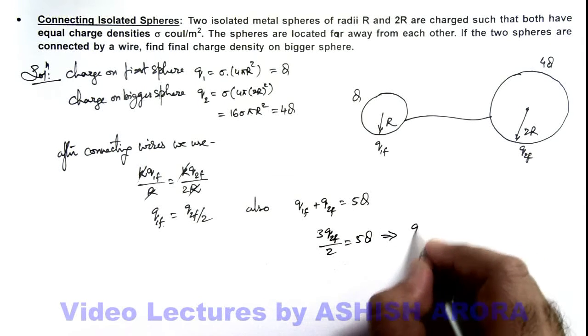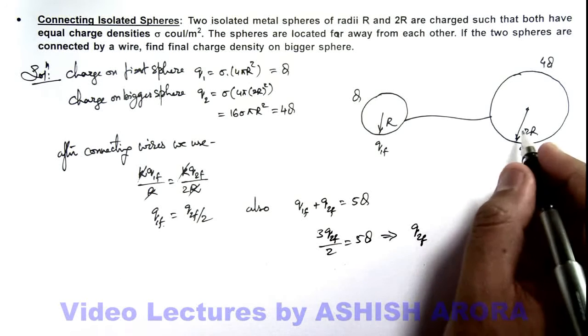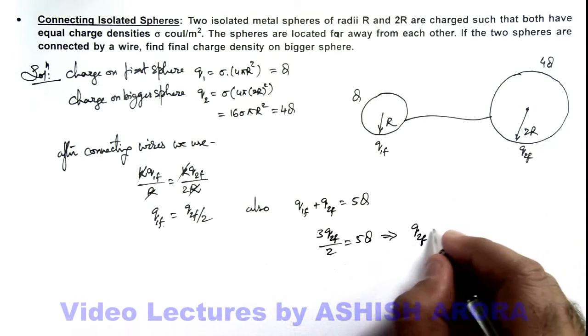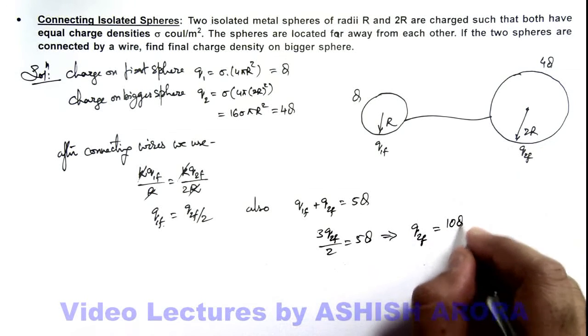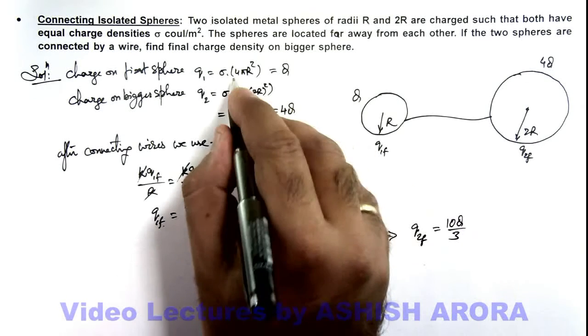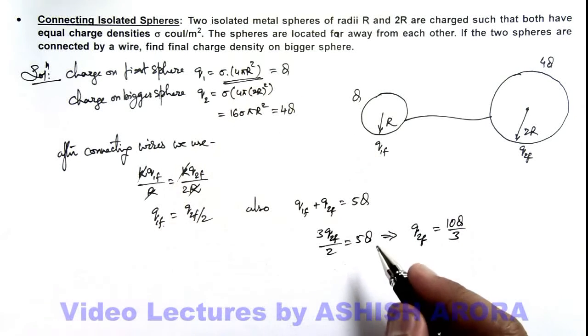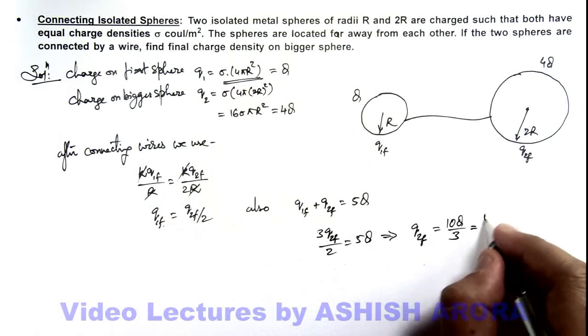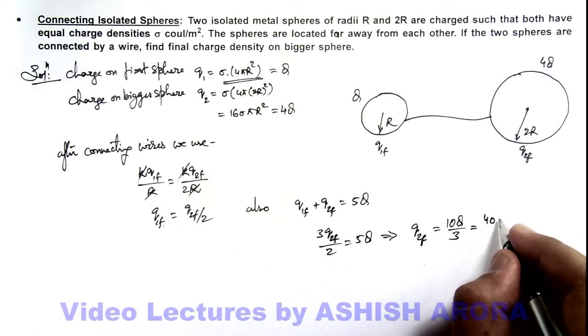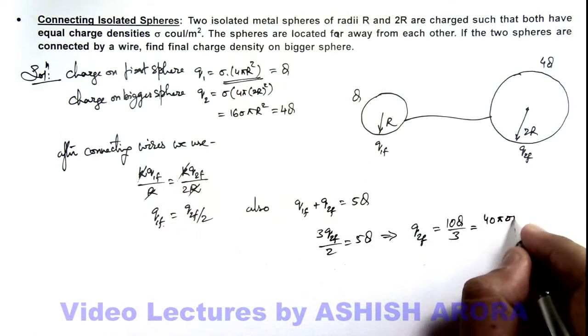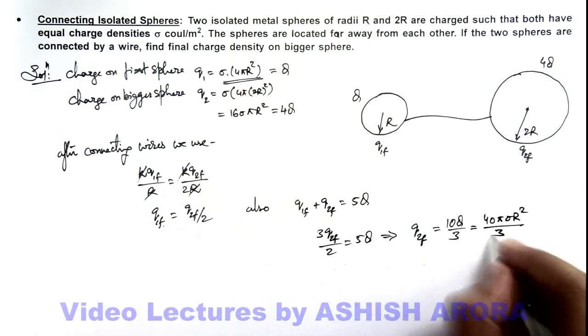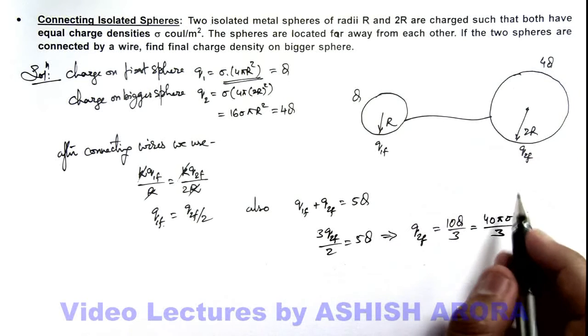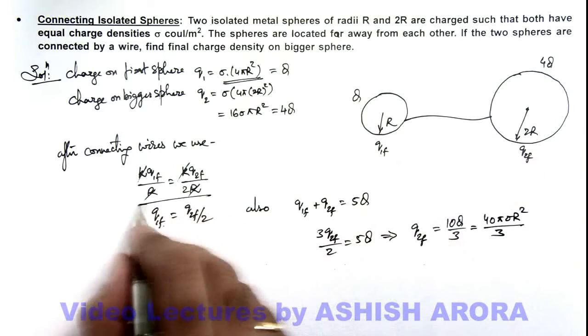Which implies we are getting Q2final, the final charge on the bigger sphere, to be 10Q by 3. If we substitute the value of Q, which is sigma multiplied by 4πR², this becomes 40πσR² by 3. This is the total charge on the bigger sphere after connecting the two when their potential becomes equal.